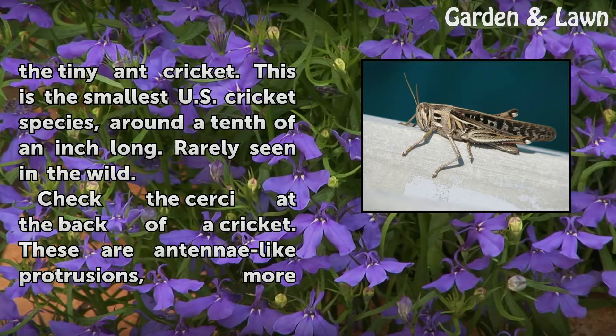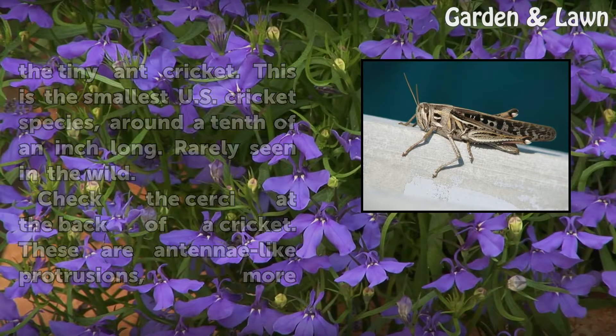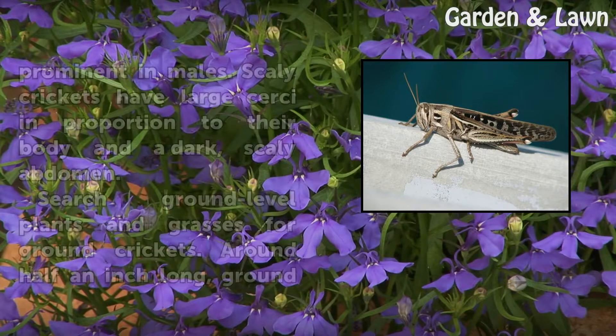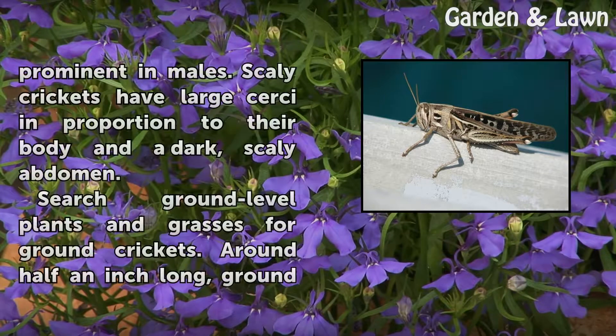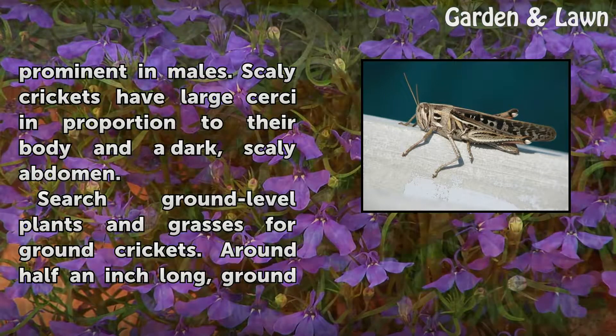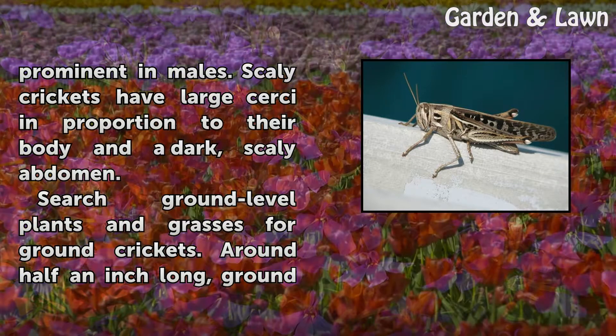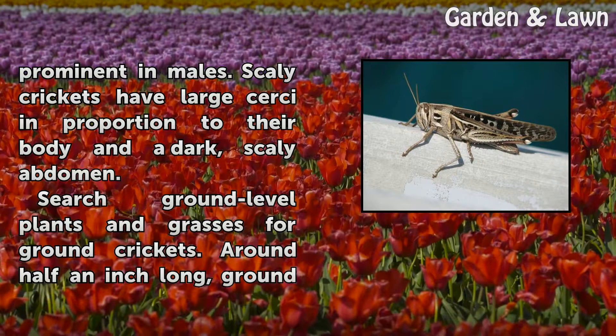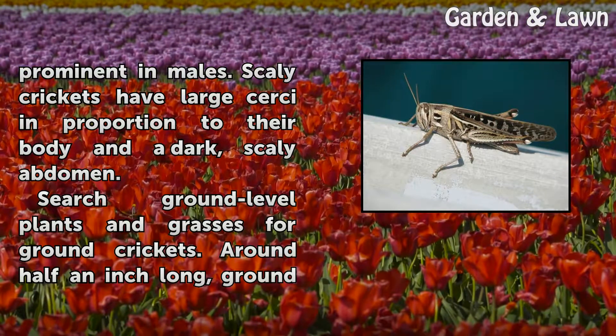Check the cerci at the back of the cricket — these are antennae-like protrusions, more prominent in males. Scaly crickets have large cerci in proportion to their body and a dark, scaly abdomen.